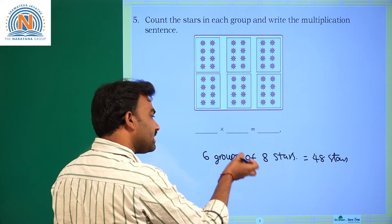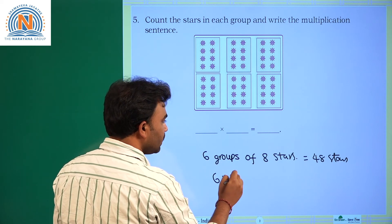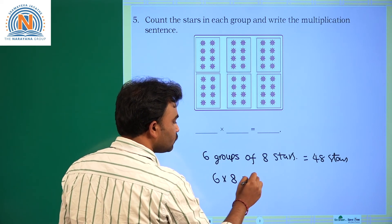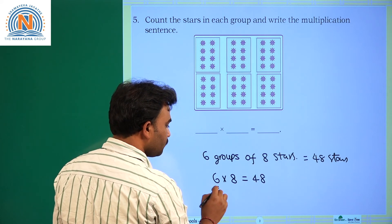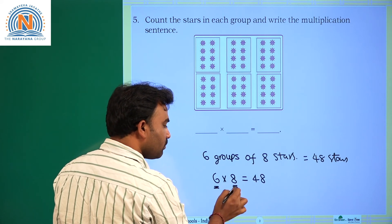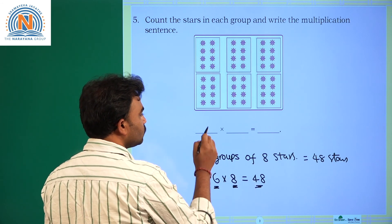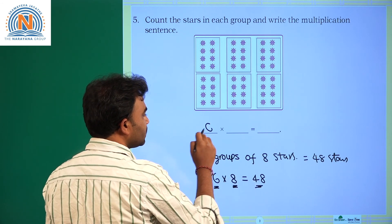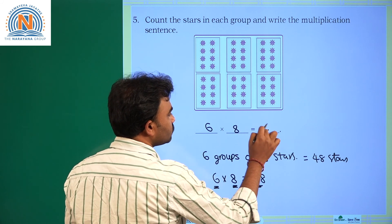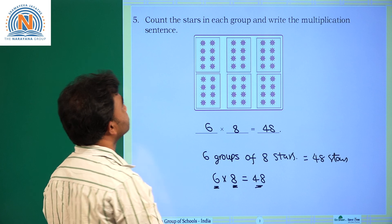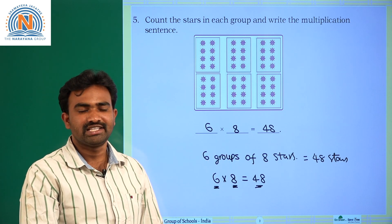This can be written as six into eight is equal to 48. Here, six is the number of groups, eight is the number of stars in each group, and 48 is the total number of stars. So the multiplication sentence is six into eight equals 48. That is our assignment for today, children. Thank you.